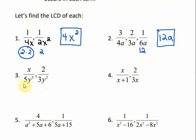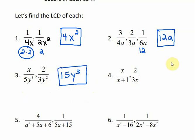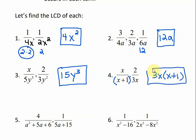For number 3, what is the smallest number that both 5 and 3 can divide into? 15. And for my y's, I have y to the third power and y to the second power. We use the maximum number of times that it occurs, so it would be y to the third. Now remember, when something's connected with a plus or minus, it's connected — we don't separate it. So x plus 1 is a factor. 3 is a factor. And x is a factor. So all of those things happen once, and they all three need to be in our least common denominator: 3, x, x plus 1.